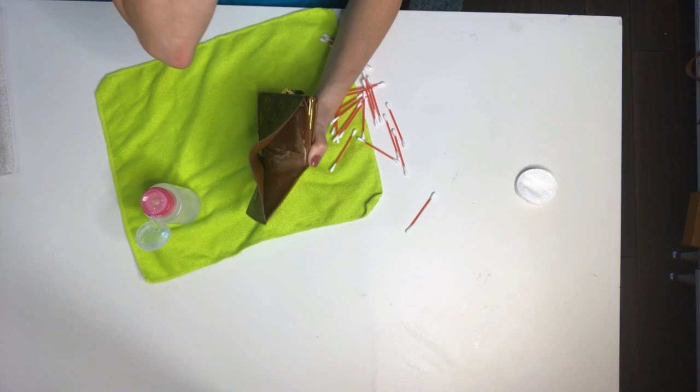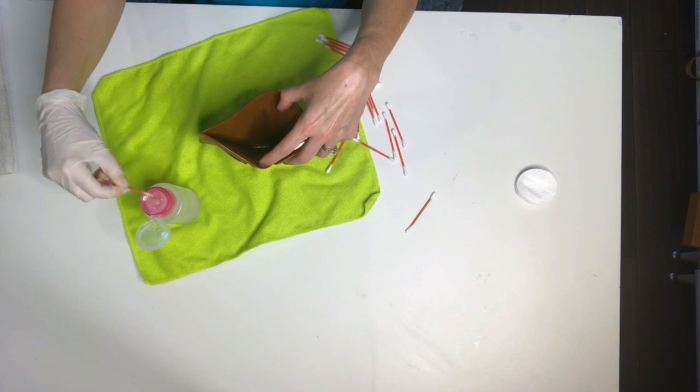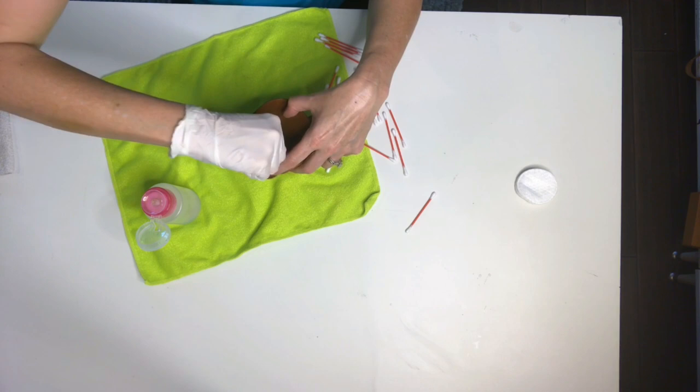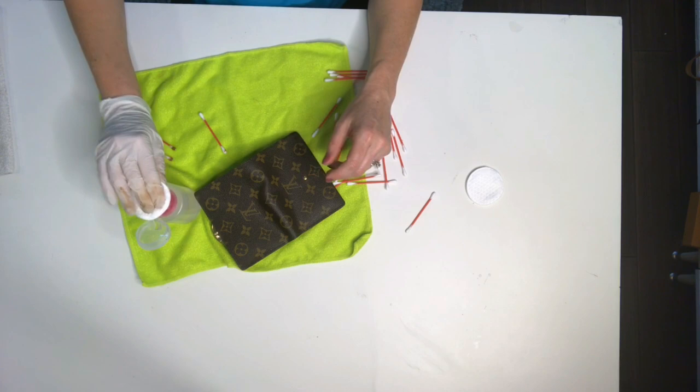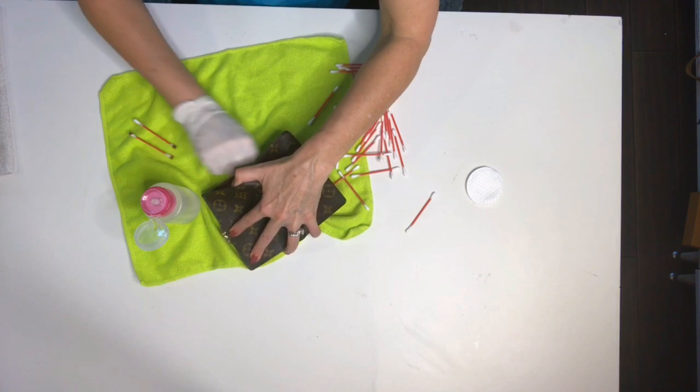Or what I have done on some of these wallets is I have gone through and I have dyed with Fiebing's leather dye the interior to make it more even or more dark. And I've also heard of people using Sharpie. I think that would take longer. Some people can even do this. Actually this is probably the quickest.